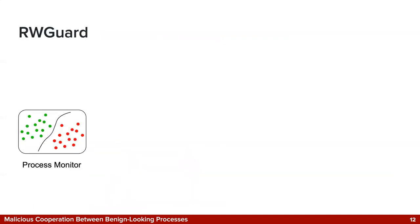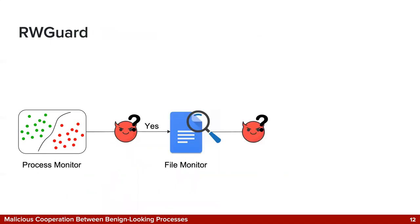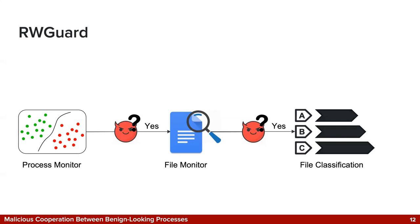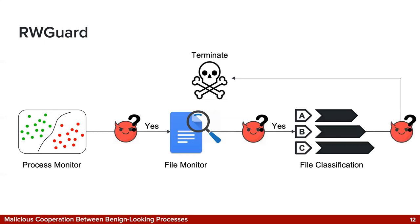The second detector I'll discuss is RWGuard, from RAID 2018. It works in principle similarly to ShieldFS, so I'll discuss it only briefly. It begins with a process monitor similar in spirit to ShieldFS's. If a process is determined to be benign based on this monitor, nothing happens. Otherwise, a number of other components come into play, which look at the files being modified, and if all analyses agree, the process is considered ransomware and terminated. But similarly to ShieldFS, the root of all decision-making is the process monitor — if a process is never flagged as malicious by the per-process classifier, ransomware can continue undisturbed.